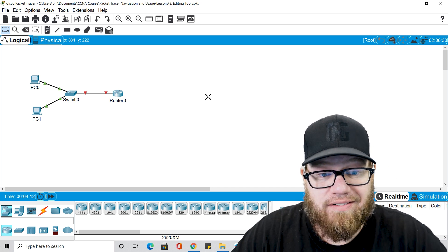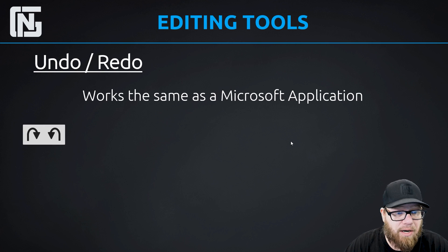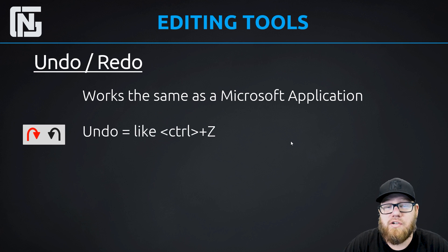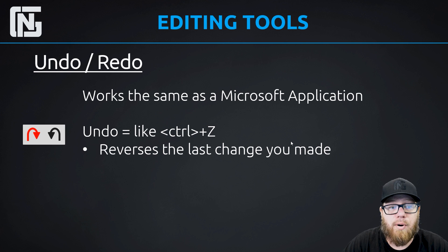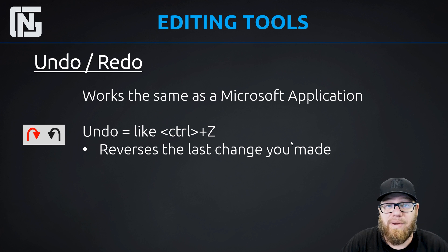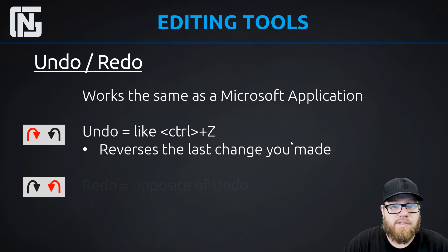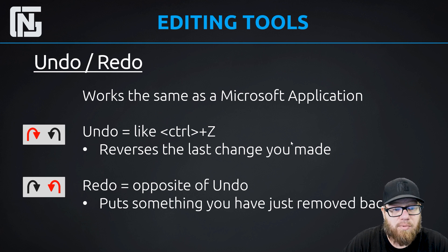The next tool: the undo and redo buttons. These are just the same as you've seen in any Microsoft application. The first button to the left is the undo button and it works just like Control+Z — so whatever you just did it'll reverse the change. If you just deleted an object it puts the object back in; if you just added a device and you undo it then it takes it back out. The other button is the redo button, the opposite of undo — it puts something you've just removed back in. You can go back and forth if you're comparing something or just to simplify your process.